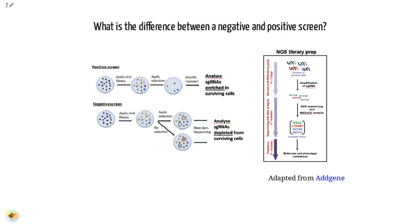Cells from the time points of interest are collected, genomic DNA is extracted, and the guide RNA region is amplified by PCR, followed by sequencing.